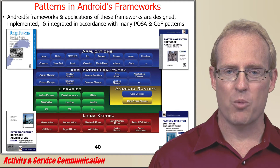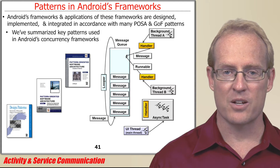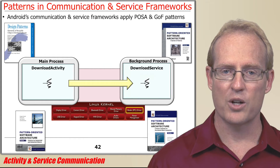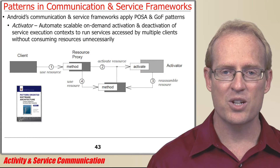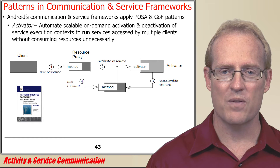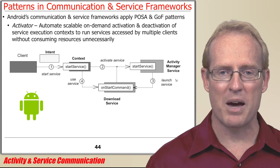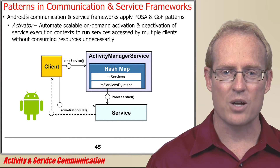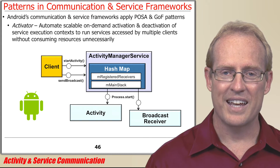Android's frameworks and applications of these frameworks are designed, implemented, and integrated in accordance with many POSA and Gang of Four patterns. We now summarize key patterns used in its communication service frameworks, focusing first on a pattern Android uses to launch both started or bound services on-demand. The Activator pattern automates the scalable on-demand activation and deactivation of service execution contexts to run services accessed by multiple clients without consuming resources unnecessarily. Android's Activity Manager service applies this pattern to launch started and bound services in response to clients that invoke the startService and bindService methods, respectively. It also applies the Activator pattern to launch other Android components such as activities and broadcast receivers on-demand.